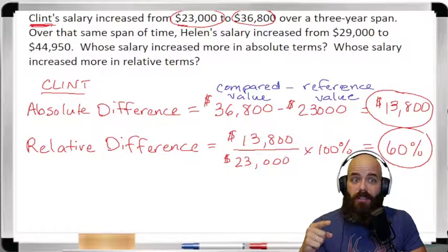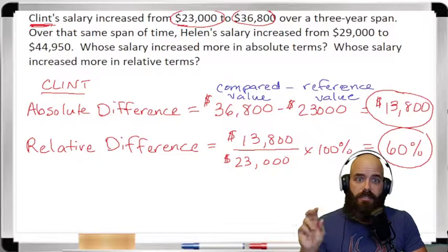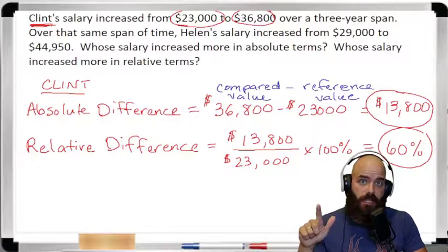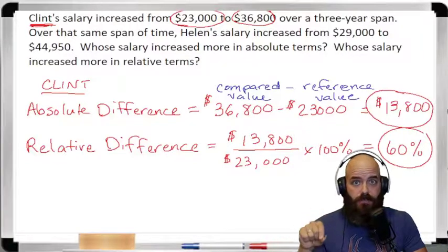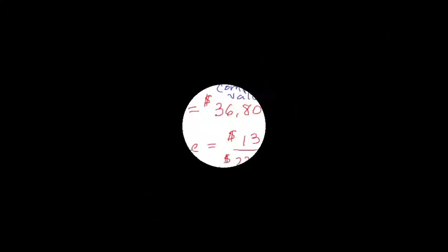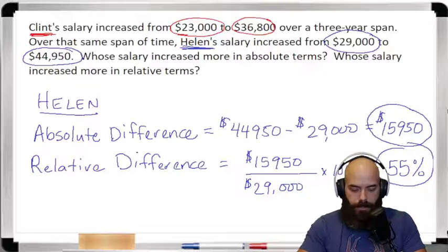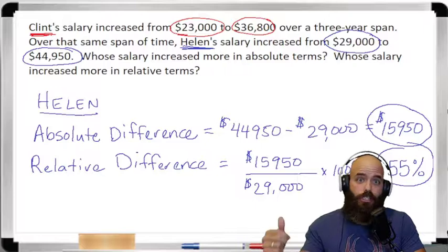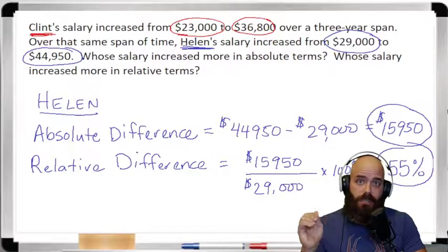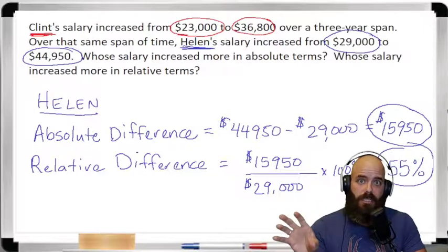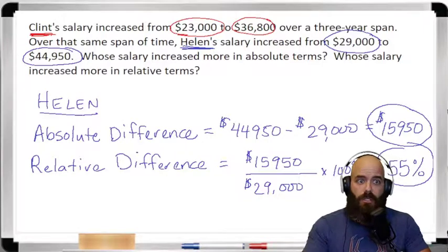Now let's do the same thing with Helen. Over the same span of time, Helen's salary increased from $29,000 to $44,950. We want to find her absolute difference and her relative difference. Helen's beginning salary was $29,000 and her ending salary was $44,950. So we're taking $44,950 as the compared value and subtracting the reference value of $29,000 to see how much money she accumulated in pay raises.